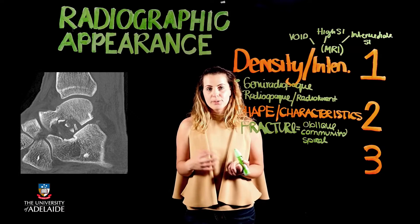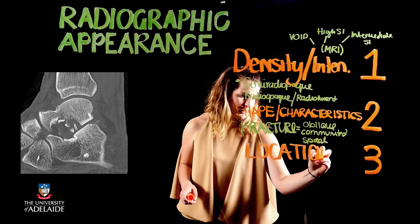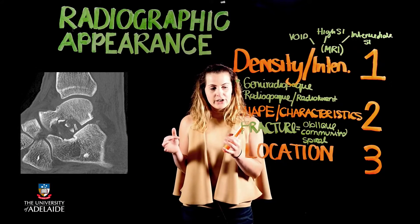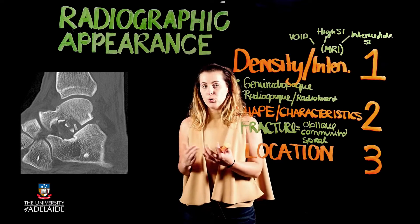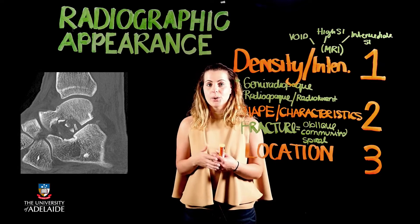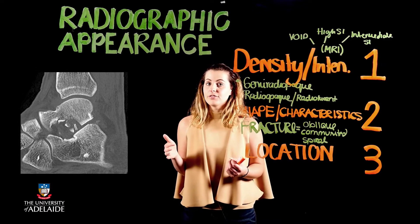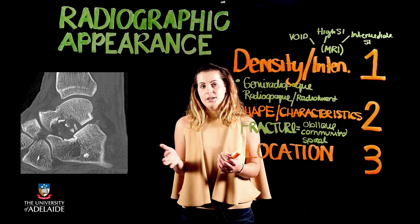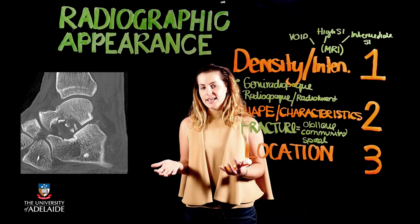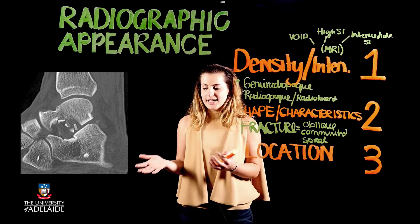The third component is location — referring to where exactly in our field of view we see the fracture, bone, or structure of interest. Coming back to the snowboarder's fracture: a snowboarder's fracture is going to be in the subtalar joint. As we can see, most of the fracture is on the inferior aspect of the talus, so you would say it's located on the inferior aspect of the talus or within the subtalar joint.